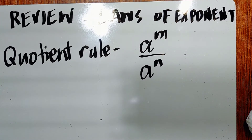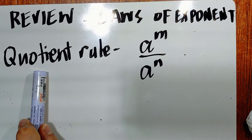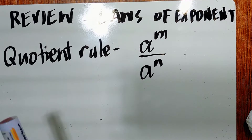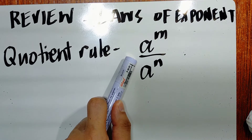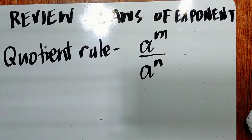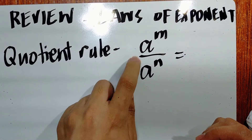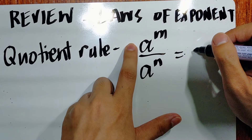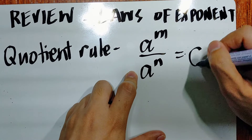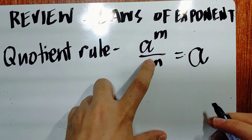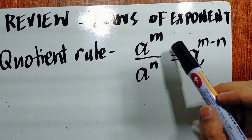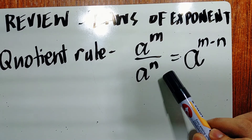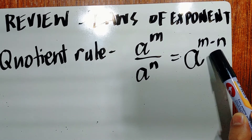Another rule is the quotient rule. The quotient rule involves division — it is in fraction form. So a raised to m divided by a raised to n: we divide the bases, and since the value of the bases is 1, 1 divided by 1 is still 1. For the exponents, we subtract them — numerator minus denominator — giving us a raised to m minus n.